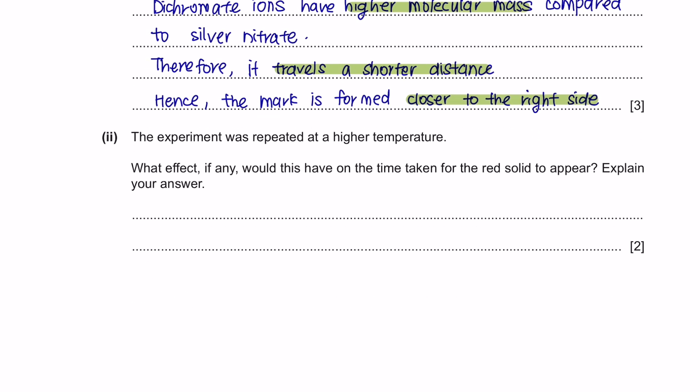Next, question part 2. The experiment is repeated at a higher temperature. What effect, if any, would this have on the time taken for the red solid to appear? And explain your answer. So, same as the previous question, the spot would form at the same place. However, as for the time taken, that would be relatively shorter. And the reason is because, at a higher temperature, particles move faster.